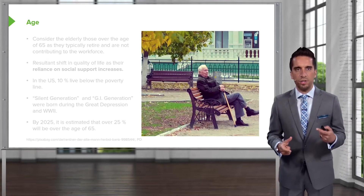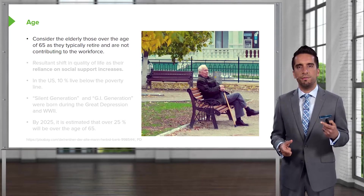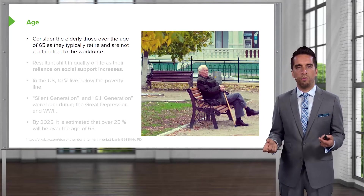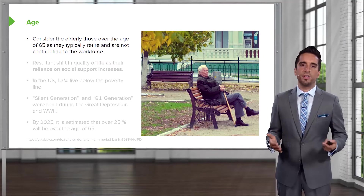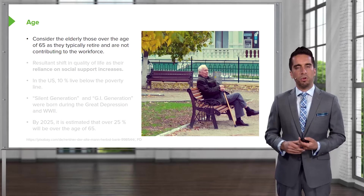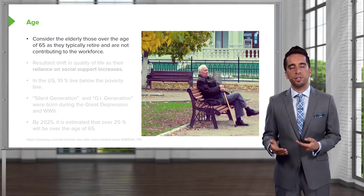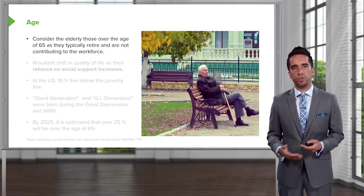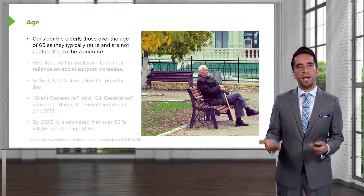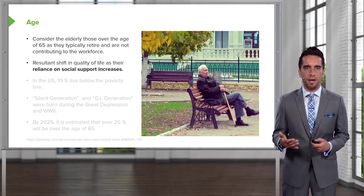We consider the elderly those over the age of 65, as they typically retire or are not contributing to the workforce. That's a moving target, because people are living longer and have the need and want to work longer. They don't necessarily retire at 65, but we would still classify them as elderly if they're over that age.